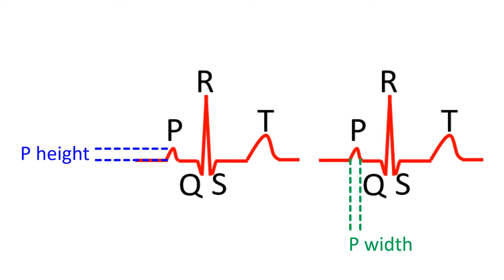The P wave is due to the electrical activity of the upper chambers, known as atrial depolarization. A normal P wave in an adult has 2.5 mm as the upper limit for both width and height in a standard ECG recording at 25 mm per second paper speed. Width is increased in enlargement of the left atrium and height is increased in enlargement of the right atrium. If both are increased, both atria are enlarged.